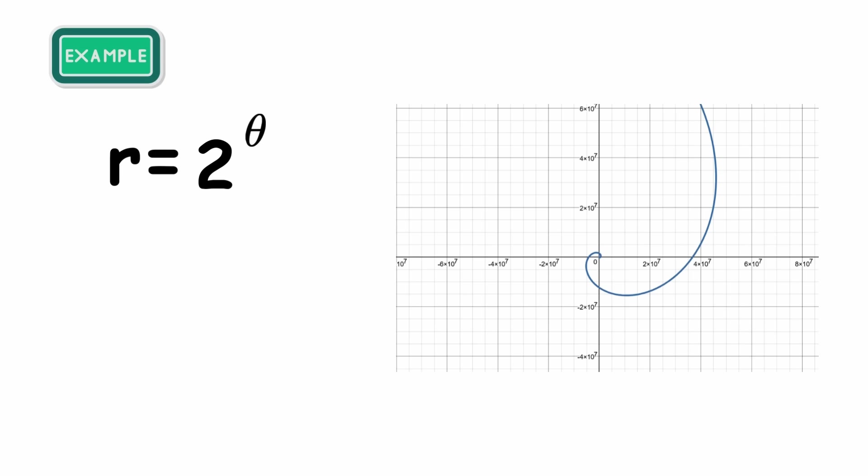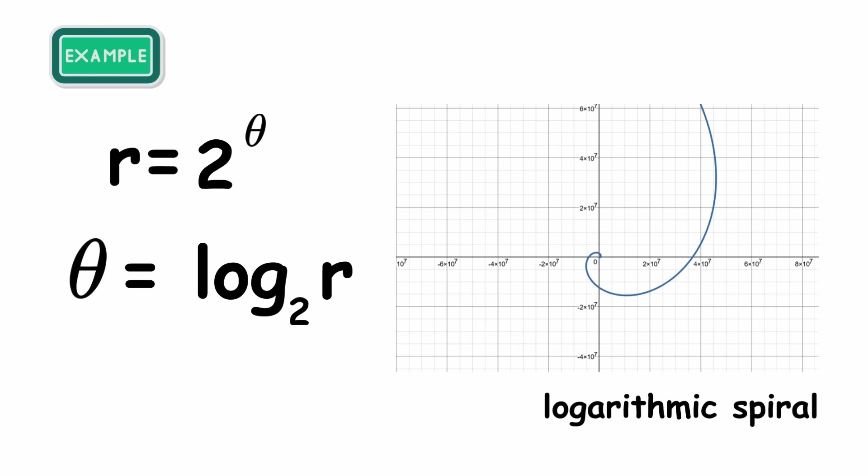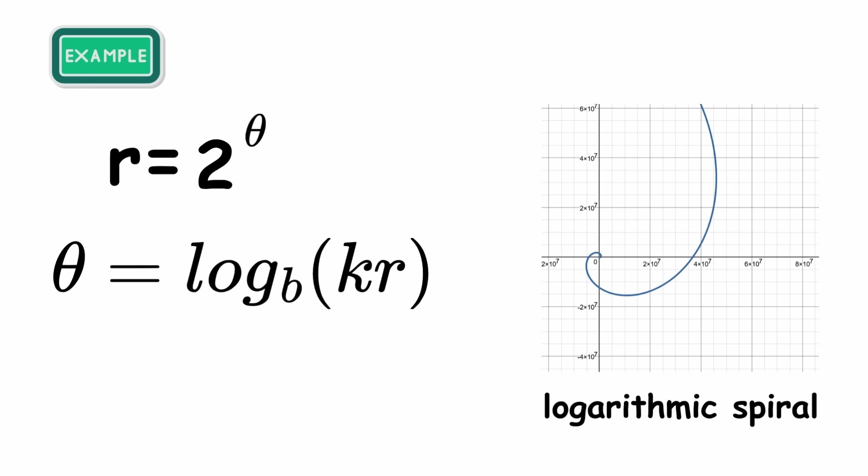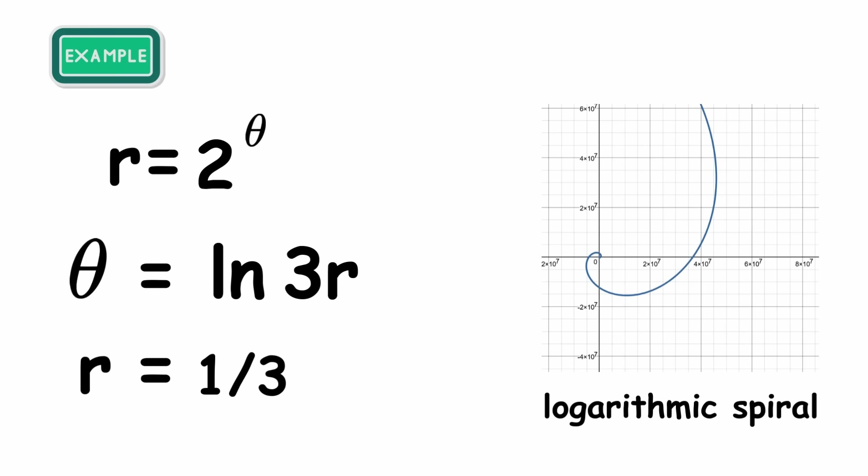By definition, this can be rewritten as theta equals log base 2 of r. This is an example of a logarithmic spiral. The logarithm can be any base, and you can multiply r by a constant. One example is theta equals natural log of 3r. Also written, r equals 1 third e to the power of theta. Here, e is Euler's number, about 2.718.